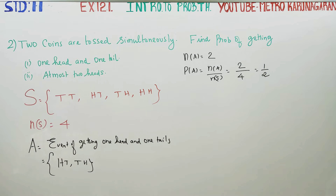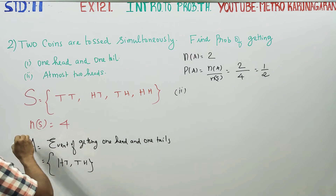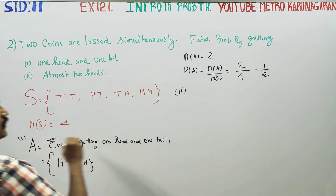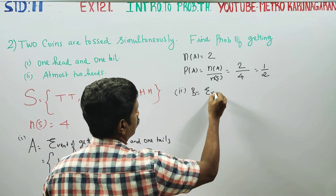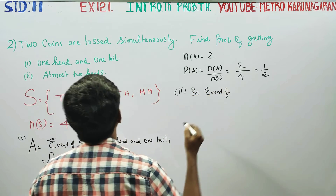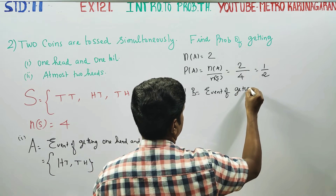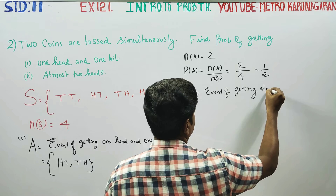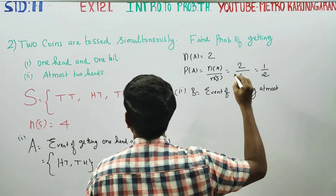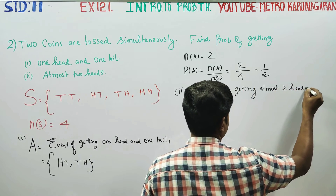Second sum: B is equal to event of getting at most two heads. What is the meaning of at most two heads? That is maximum two heads.